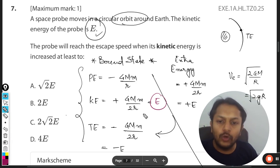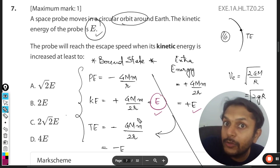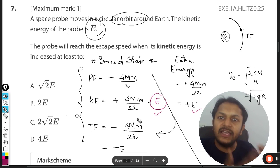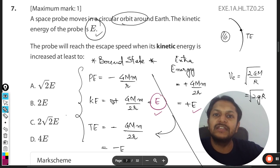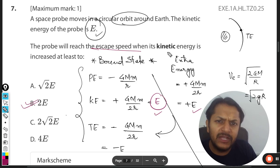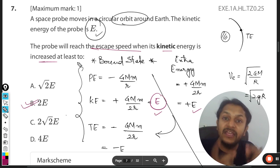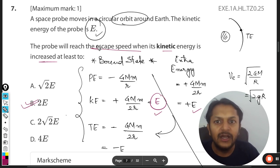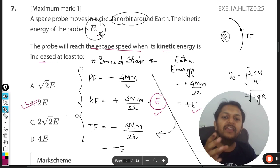Here the total energy is also, it is negative E. So we have to provide plus E. It means E was the kinetic energy of the satellite which was already in the orbit. Further, E energy has to be given to it. So whatever energy the satellite was having, the same amount of energy has to be given to the satellite and satellite will fly away. It means that the answer for us will be 2E. The probe will reach the escape speed when its kinetic energy is increased to 2E. Earlier it was E, E is further given to it, it becomes 2E. Hence the answer will be B.